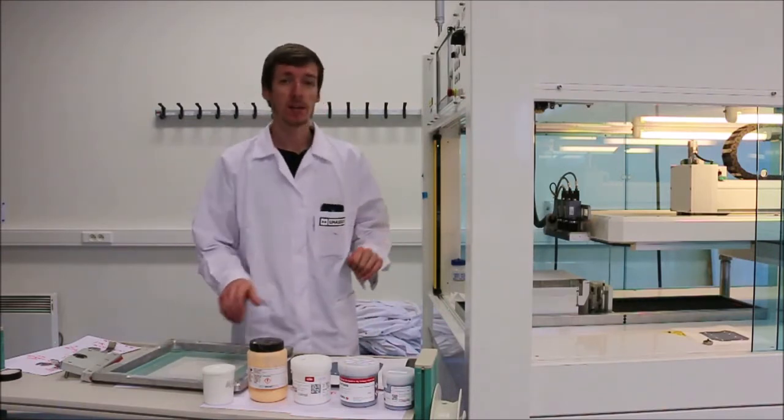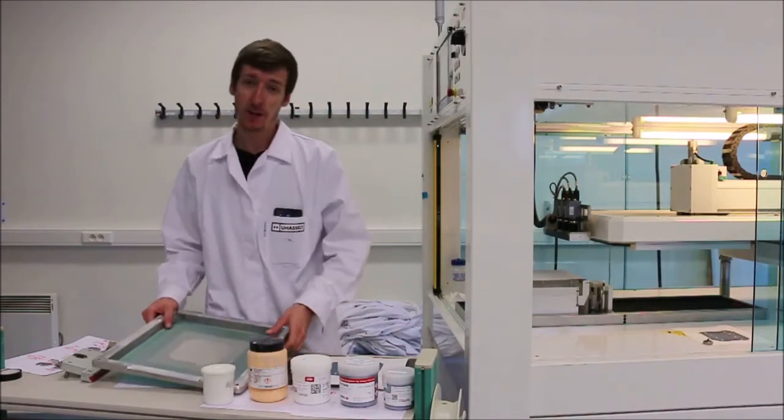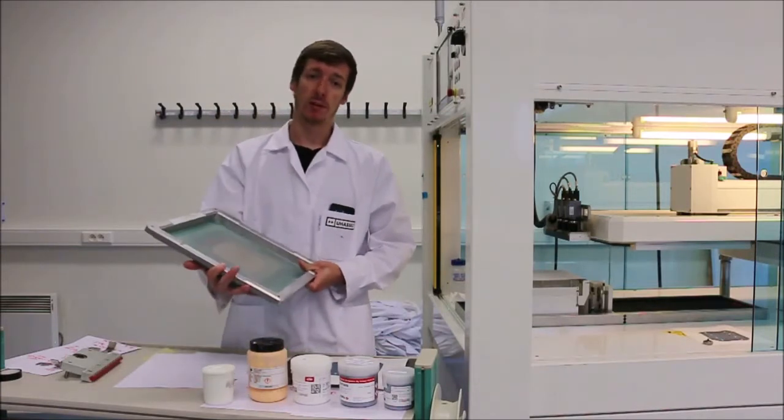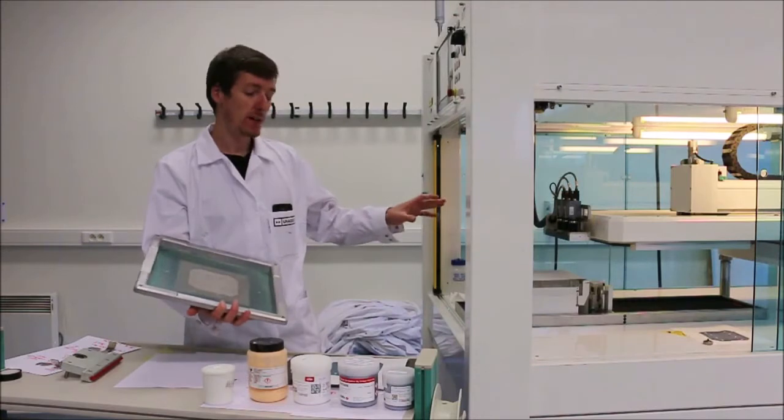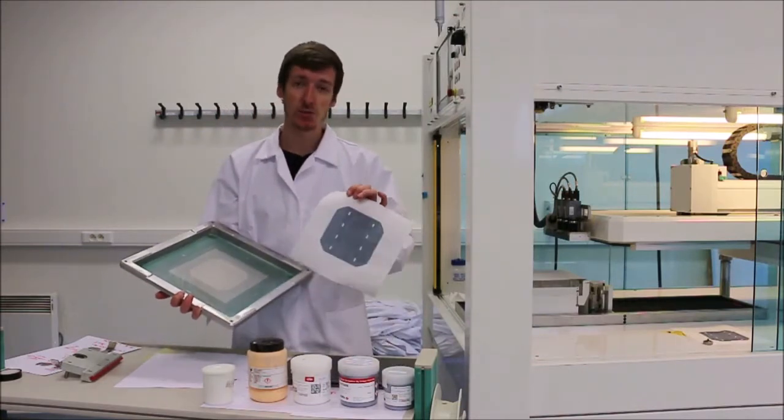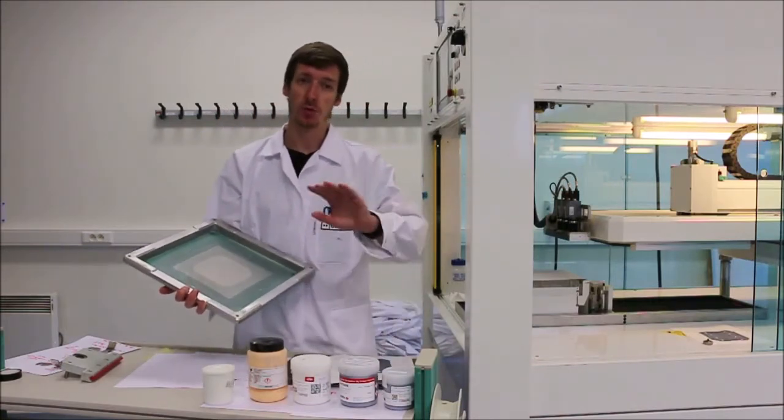There are two main methods of screen printing. We have flatbed screen printing and roll-to-roll screen printing. In our lab we only have a flatbed screen printer which means we can only print sheet to sheet and not roll to roll.